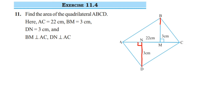Similarly, BM is also perpendicular to AC. Now we have to find out the area of this quadrilateral. You have learned that area of a quadrilateral is base into height, but we don't know base and height here — they have given different measurements. So here we are going to split it. We are going to first find the area of the two triangles. You can see two triangles here.